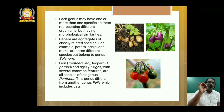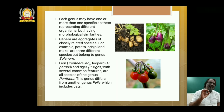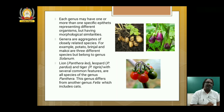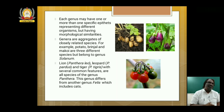Panthera leo — lion, Panthera pardus — leopard, Panthera tigris — tiger. With several common features, all species of the genus Panthera share those features. But this genus differs from another genus Felis, which includes cats. After species and genus, above that we get the family.